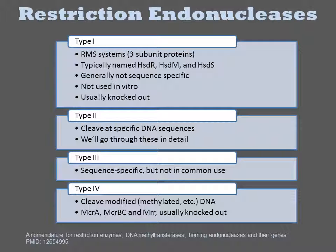Type 2 endonucleases are the ones you're most likely familiar with. This class includes EcoRI and other sequence-specific endonucleases. We'll go through this class in more detail next. Type 3 endonucleases are sequence specific, but they are not in common use for in vitro DNA manipulations. Type 4 are similar to type 1 in that they are most relevant as common low-specificity enzymes present in prokaryotic genomes. They cleave methylated or otherwise modified DNAs and are typically encoded by three proteins. In E. coli, the McrA, McrBC, and Mrr genes are an endogenous type 4 system typically knocked out.